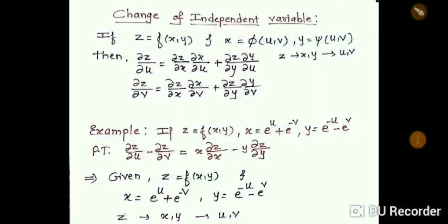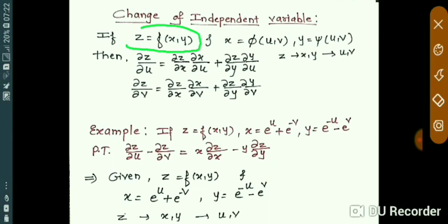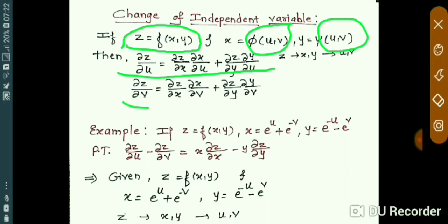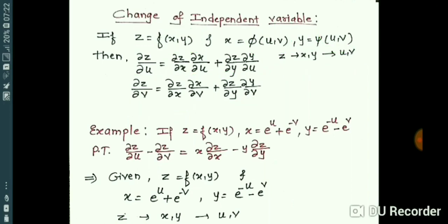Hello friends, good morning. Let's start our today's topic: change of independent variable. Here I have written the formula. If z is a function of x, y, and x is a function of u, v, and y is also a function of u, v, then ∂z/∂u = (∂z/∂x)(∂x/∂u) + (∂z/∂y)(∂y/∂u), and ∂z/∂v = (∂z/∂x)(∂x/∂v) + (∂z/∂y)(∂y/∂v). You don't need to remember these formulas — just find out the dependency and you can write the formula yourself.